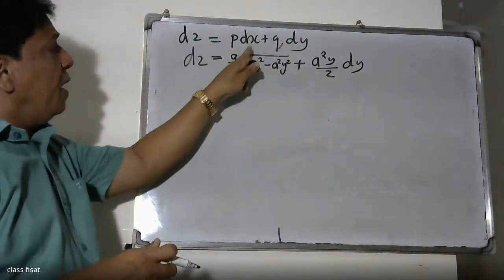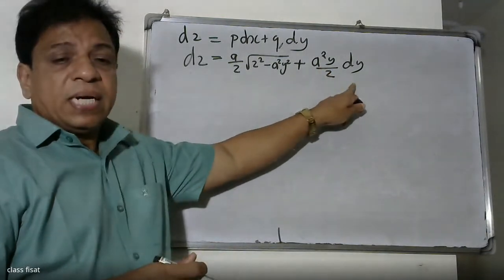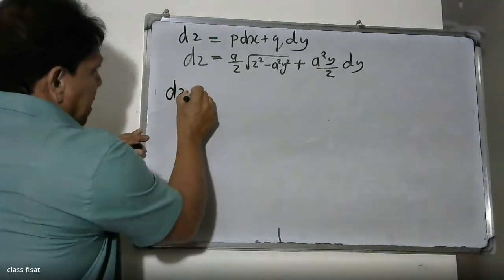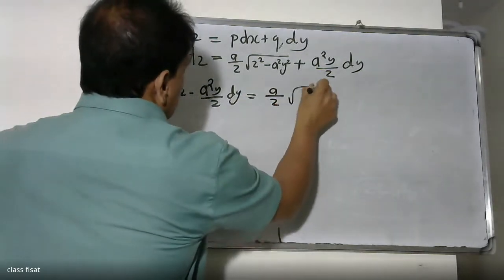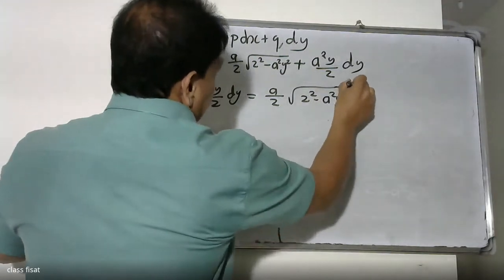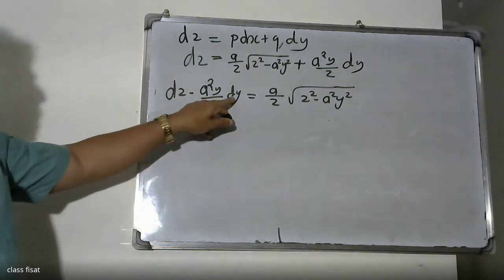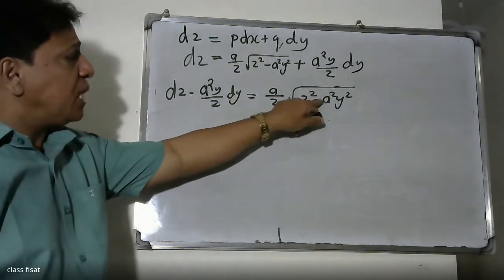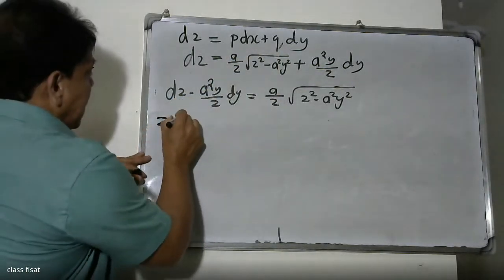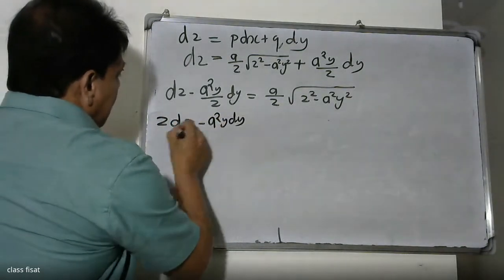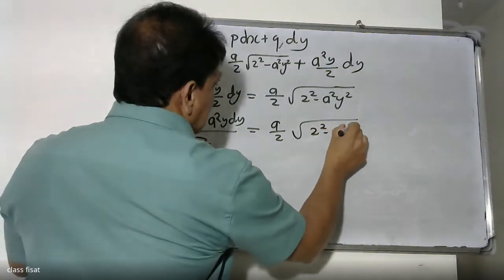Writing dz equals P dx plus Q dy, where P equals root of Z squared minus S squared minus y squared and Q equals S squared y divided by Z. Rearranging: dz minus S squared y dy divided by Z equals A dx. Left-hand side: Z dz minus S squared y dy over Z squared minus S squared y squared equals A dx.